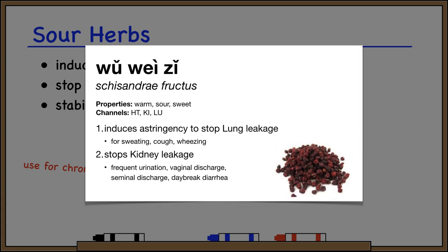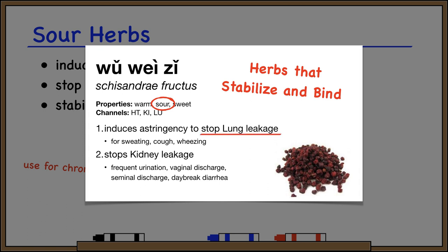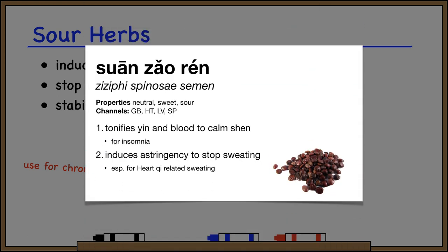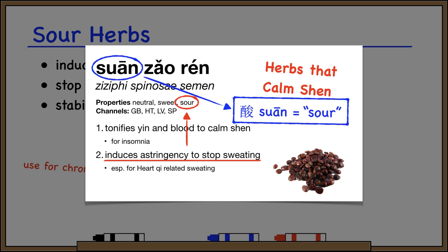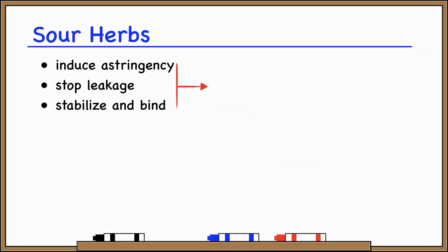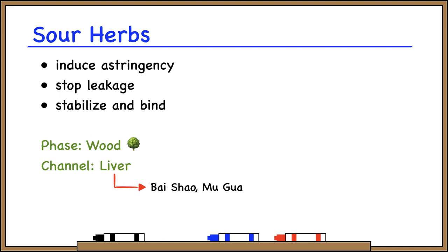One herb we learned was Wuzi. It's in the category herbs that stabilize and bind. It's sour in flavor, and its main function is to stop leakage — both lung qi leakage like cough and sweating, and kidney leakage. Even herbs not in the stabilize-and-bind category can have an astringent action. For example, Suanzhaoren is in the category herbs that calm shen. Its main action is to tonify blood to calm shen, but it has a secondary action of stopping sweating, which is why it's marked sour in flavor. The character suan in Suanzhaoren literally means sour — sour date seed — so that's another way to remember its astringent property. In terms of five-phase correspondences, sour corresponds to the wood phase and the liver channel. Some herbs like Bai Shao and Mu Gua are labeled sour only because they strongly enter the liver channel, not because they stop leakage.